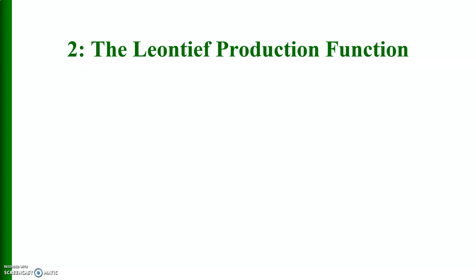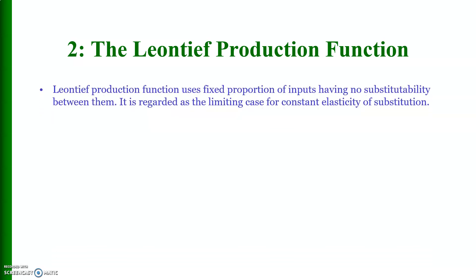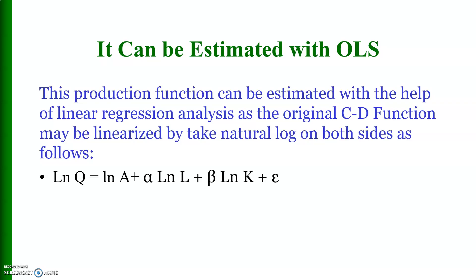The second production function is the Leontief production function. In the Leontief production function, we have fixed proportions of the inputs used for production, and there is no substitutability between the inputs used in the production process. It is regarded as the limiting case for constant elasticity of substitution. The isoquants in the case of the Leontief production function are L-shaped, because the two inputs are used in fixed proportion. In contrast, for the Cobb-Douglas production function, the isoquants are not L-shaped and not linear.